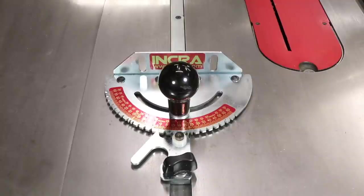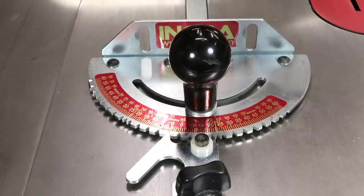I bought this Incra miter jig about 15 to 20 years ago. It came with no fence, so I cut a strip of MDF and screwed it firmly to the jig. And that served me pretty well for several years.